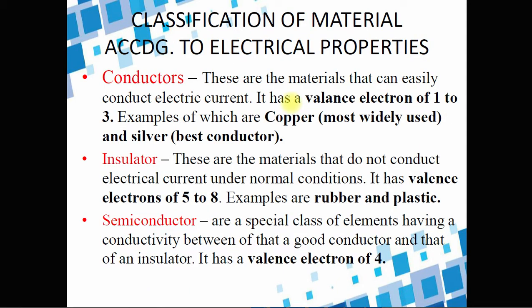Let us review the classification of materials according to electrical properties. We have the conductor, the insulator, and the semiconductor. When we say conductor, these are materials that can easily conduct electric current. They have a valence electron of 1 to 3 in the periodic table. The most widely used conductor is copper, and silver is the best conductor. An insulator is a material that hardly conducts electrical current, with valence electrons ranging from 5 to 8. Examples are rubber and plastic.